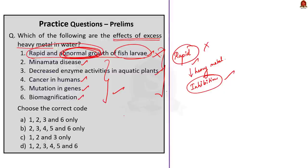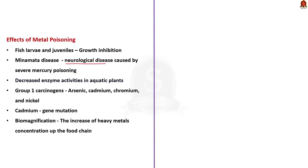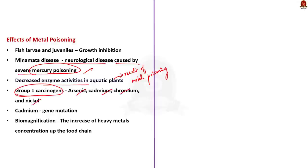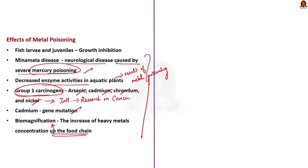All other statements are correct. The correct answer is option B — 2, 3, 4, 5, and 6 only. Minamata disease is a neurological disease caused by severe mercury poisoning. Decreased enzyme activities in aquatic plants is an effect of metal poisoning. Arsenic, cadmium, chromium, and nickel are classified as Group 1 carcinogens by the International Agency for Research on Cancer. Heavy metals like cadmium can cause gene mutation. Increase of pollutant concentration up the food chain is called biomagnification, and heavy metals cause this too.